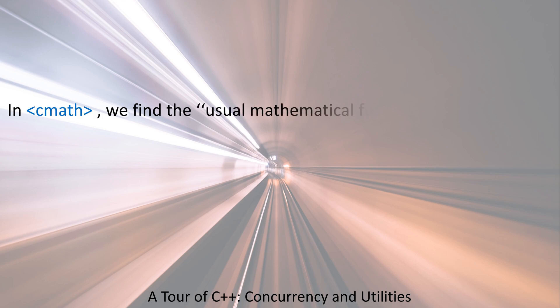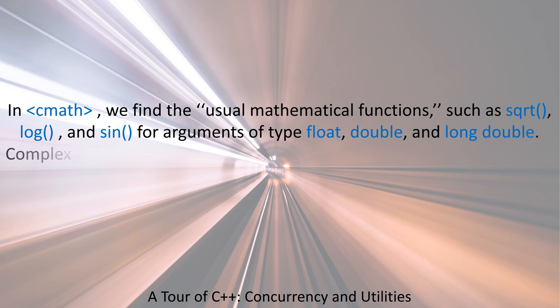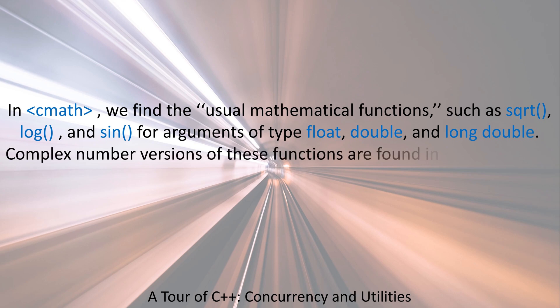In cmath, we find the usual mathematical functions, such as sqrt, log, and sin, for arguments of type float, double, and long double. Complex number versions of these functions are found in complex.